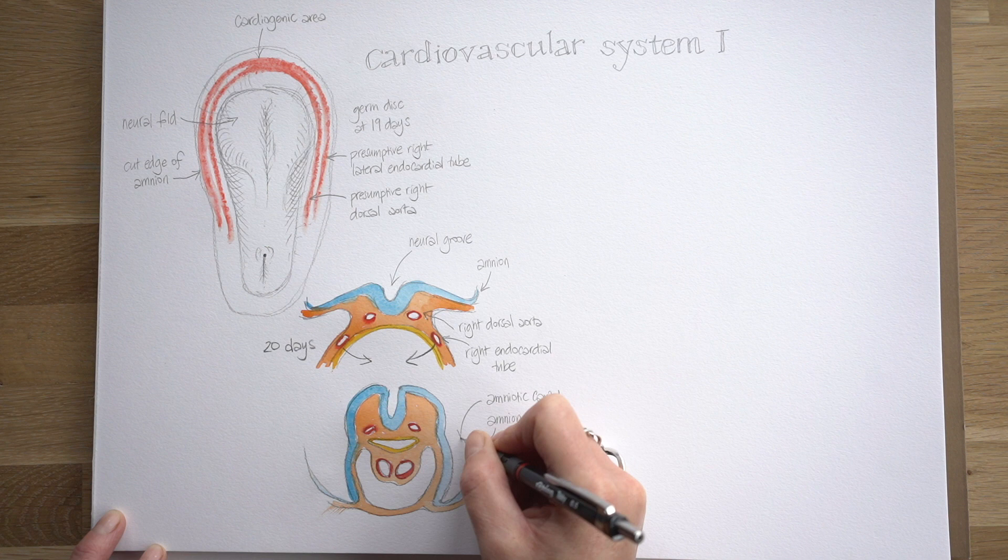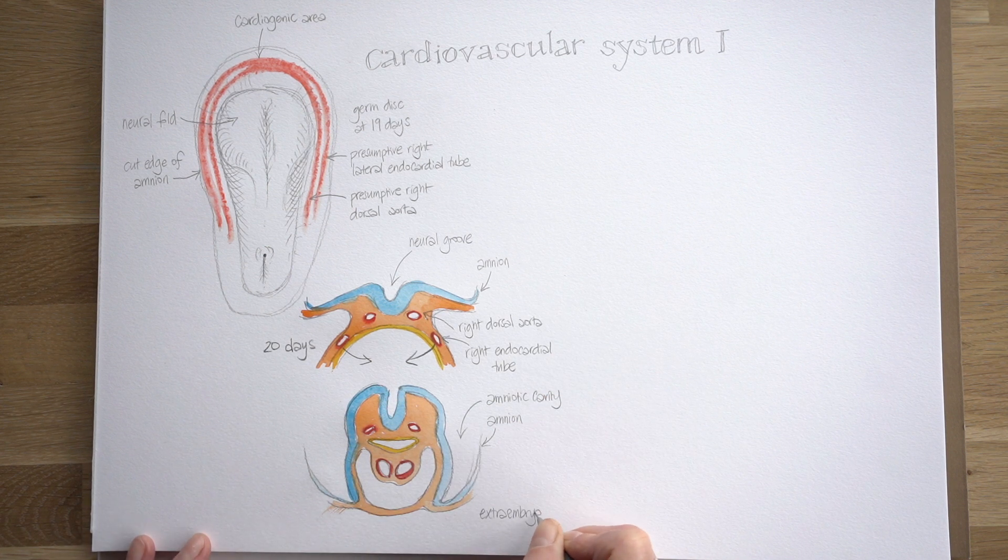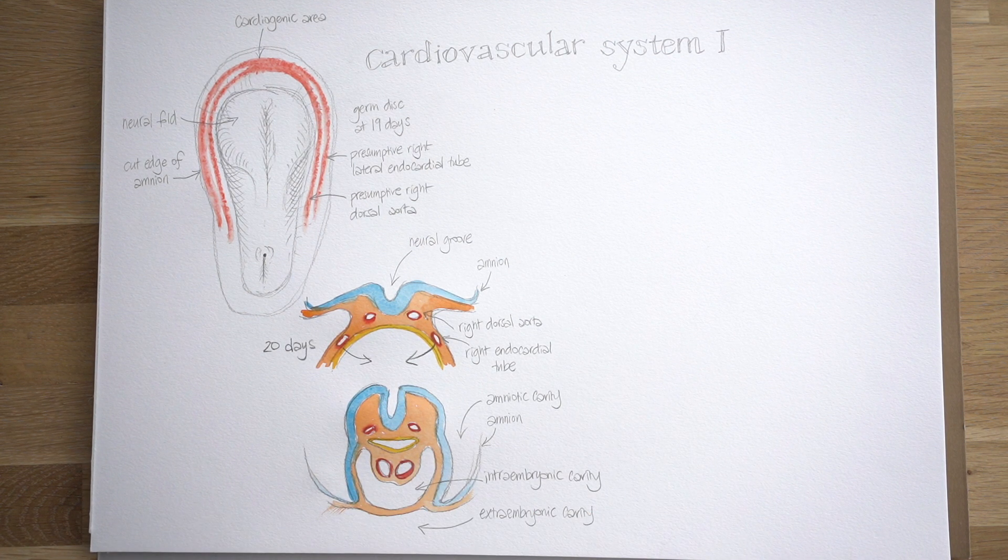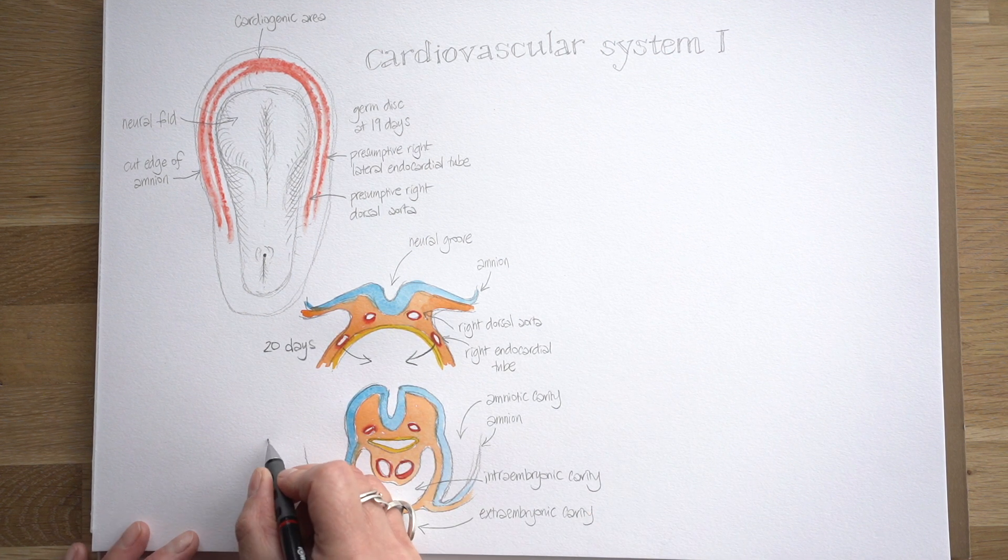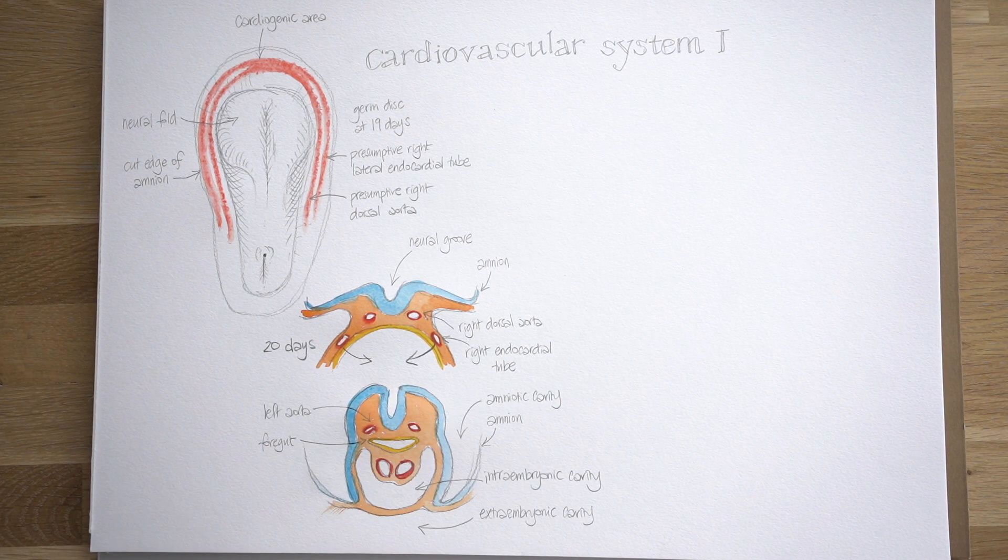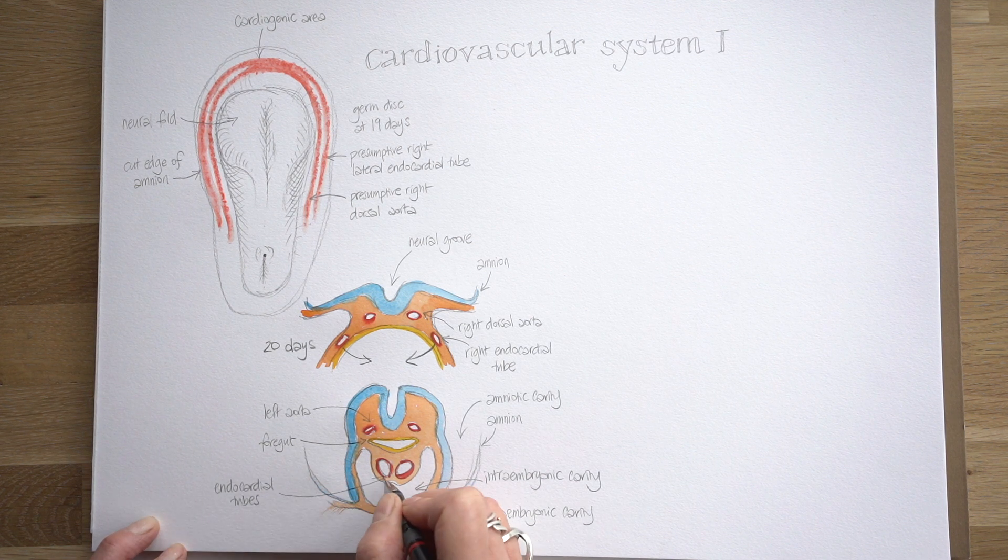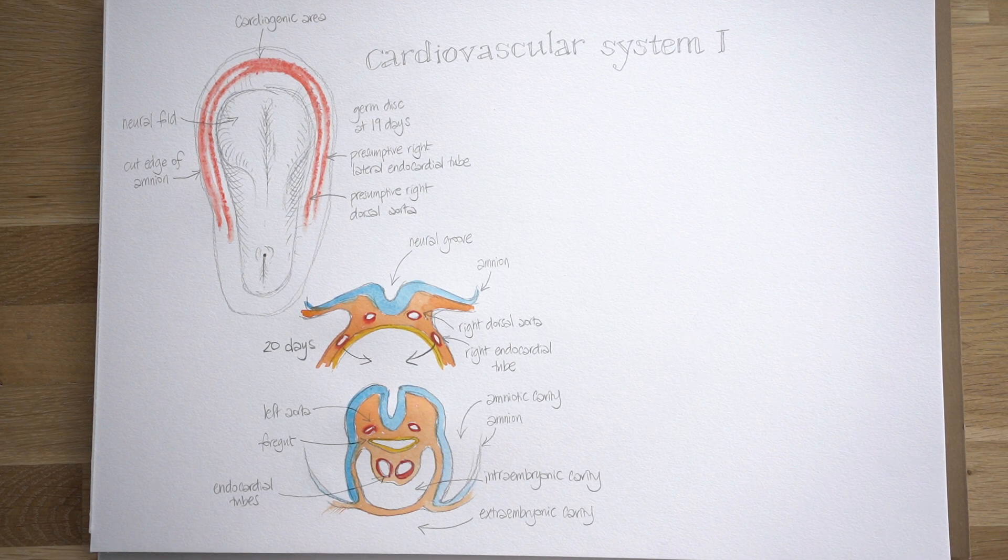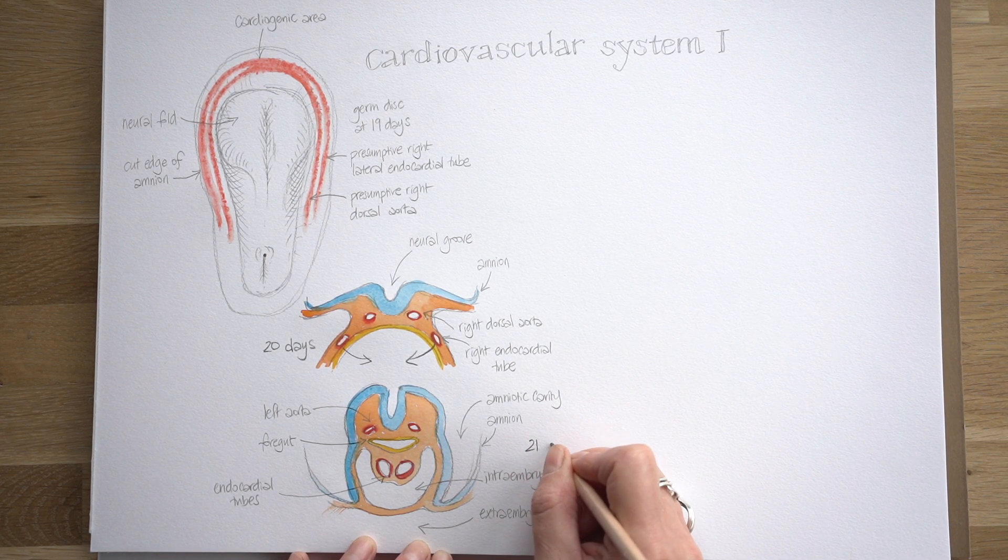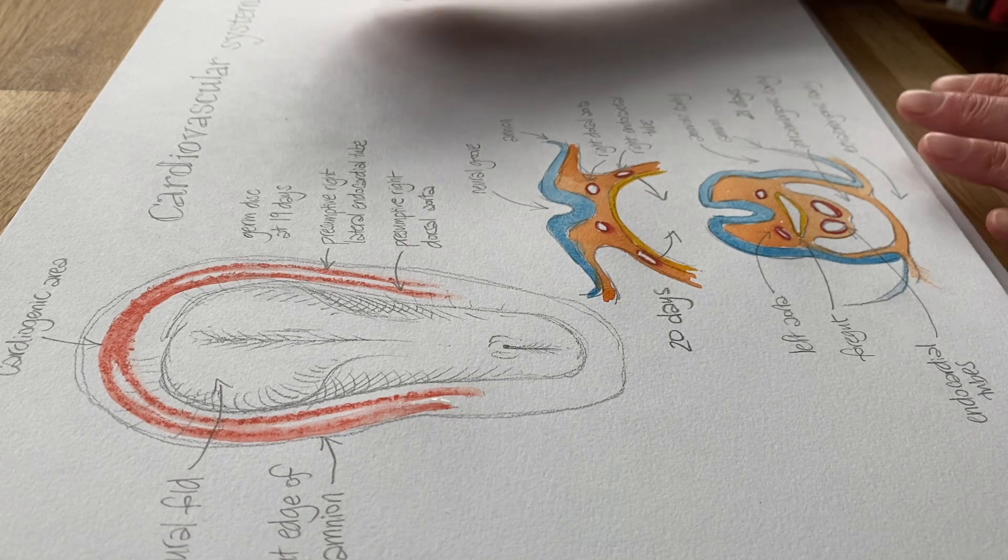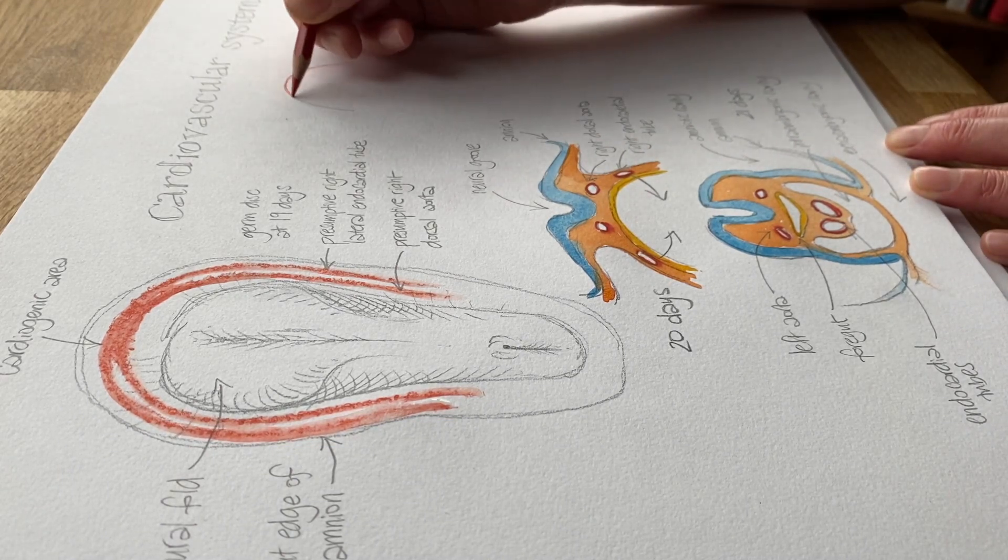As we get into the fourth week we can see that the amniotic cavity is being pulled around that embryo. It still exists in an extra embryonic cavity but we've also got this intra-embryonic cavity trapped inside and at this point that's going to be the precursor of the pericardial cavity, the cavity that lies around the heart, the pericardial sac. There are those endocardial tubes and they are basically the origin of the heart and that cross-section relates to about 21 days of development. So just three weeks after conception and you've already got the makings of a heart.